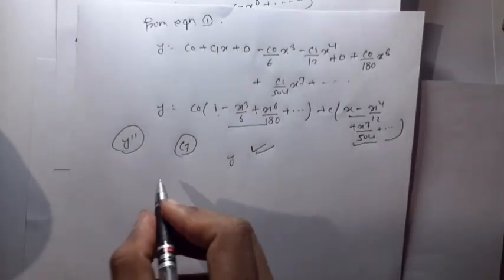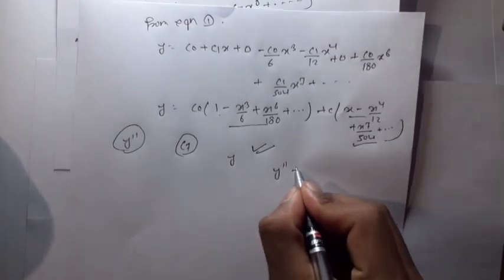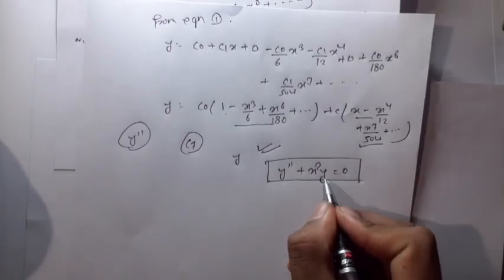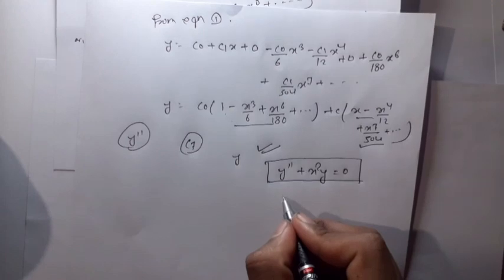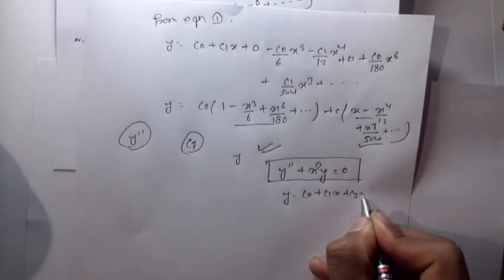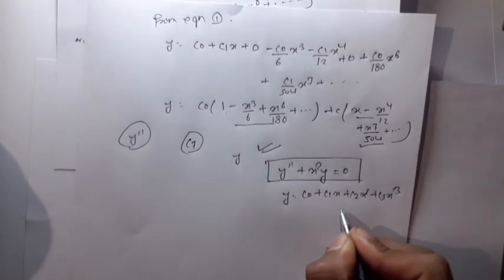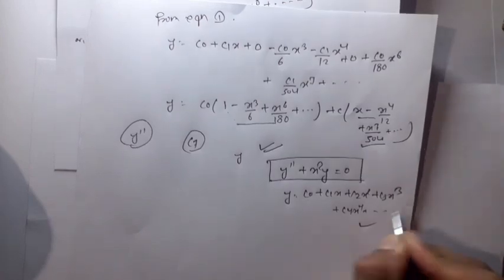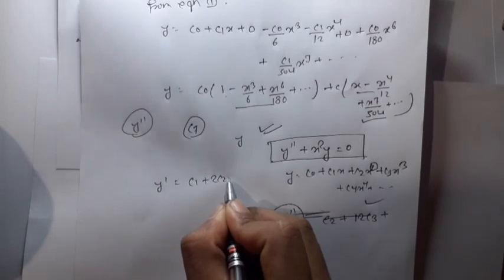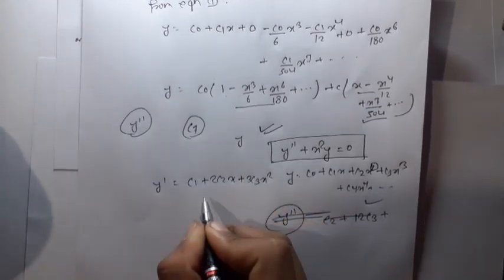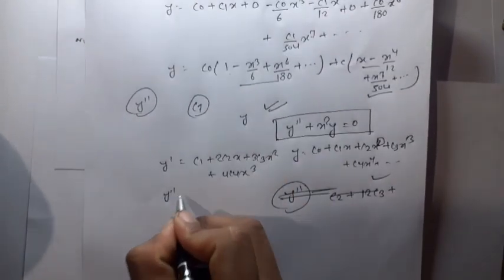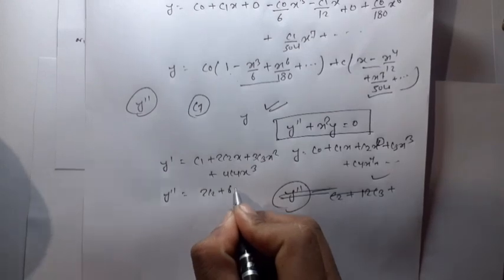In another case: y double dash plus x squared times y is equal to 0. We again let y equal to c0 plus c1x plus c2x squared plus c3x cubed plus c4x to the 4th plus dot dot dot. Then y double dash equals 2c2 plus 6c3x plus 12c4x squared plus dot dot dot. The process is the same.